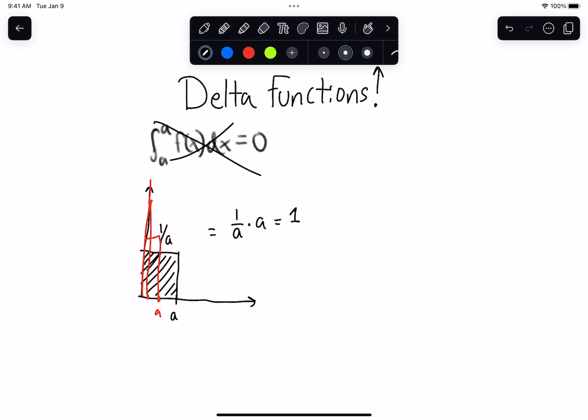We want to ask, what happens as I let a get as close to 0 as I possibly can without actually hitting 0? Because if it did hit 0, you would basically be dividing by 0. And this is what we mean by a delta function.